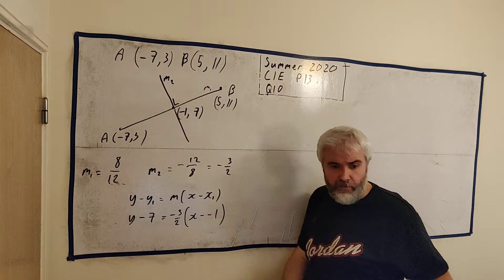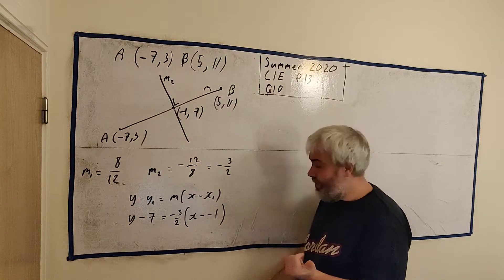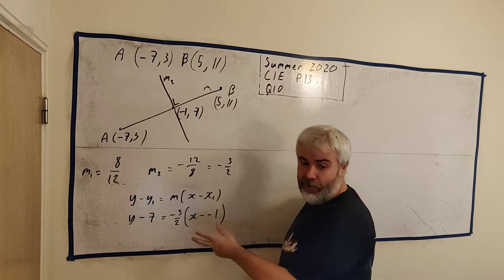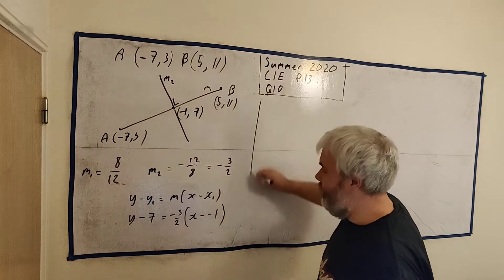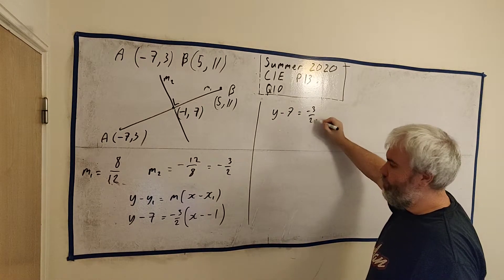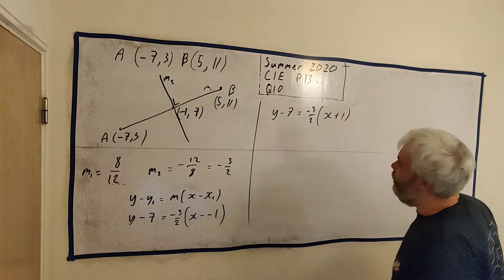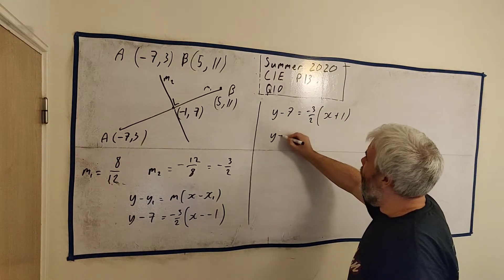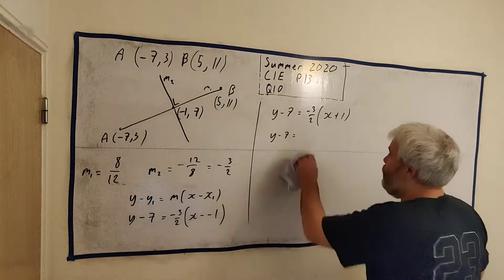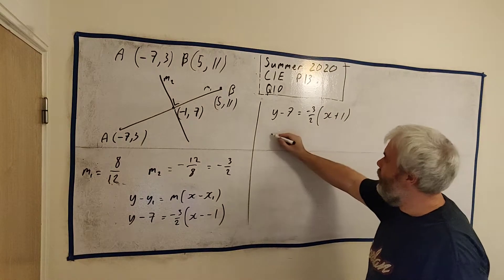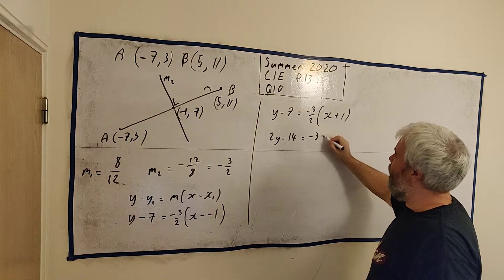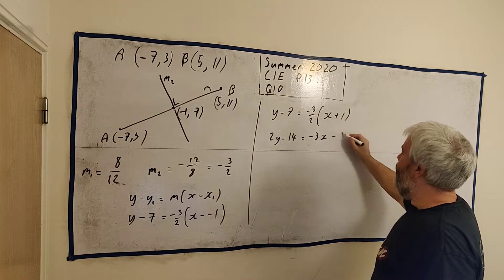Now that's the equation of a line. We're finished, except it doesn't look like theirs. So let's make this look a little neater. We clean a lot of this up here. y minus 7 equals minus 3 over 2, x plus 1. Actually, you know what? Let's multiply everything by 2 first. I don't like this 2 here.